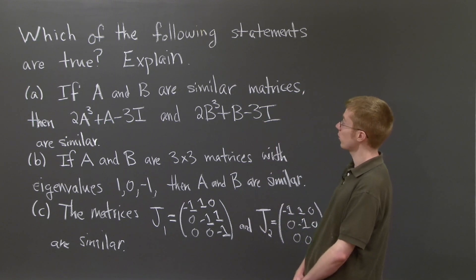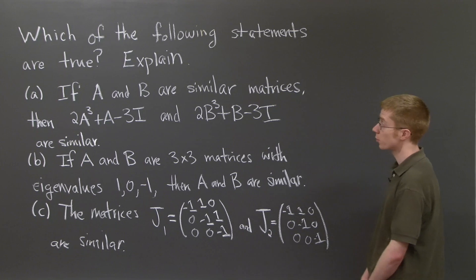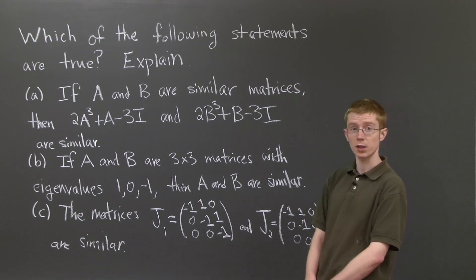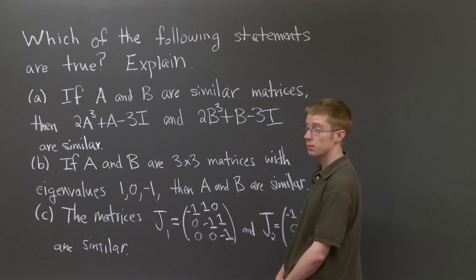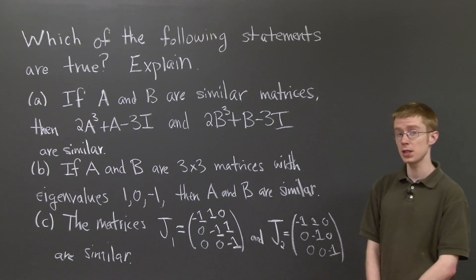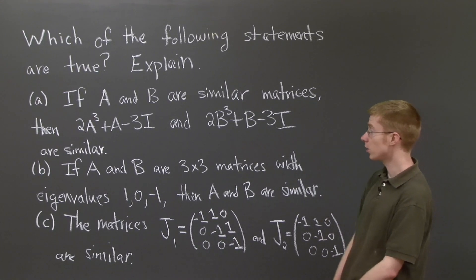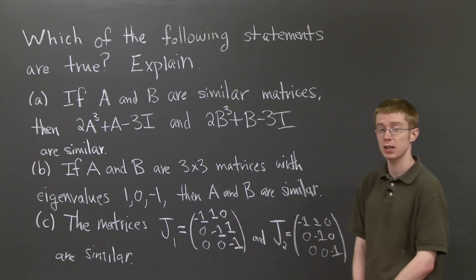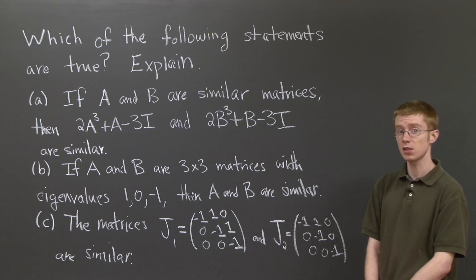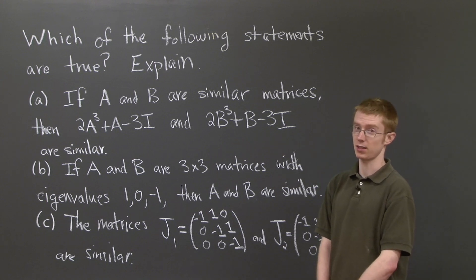So the question asks which of the following statements are true, and it asks you to explain why. The first statement is if A and B are similar matrices, then 2A³ + A - 3I and 2B³ + B - 3I are similar.